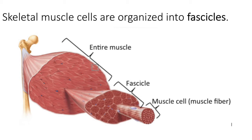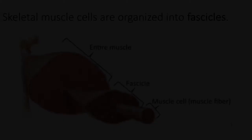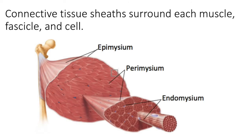Those smaller units are called muscle cells. Remember, when we described skeletal muscle tissue we said the cells are long, cylindrical, and multi-nucleated — that is exactly what we're talking about here. Many muscle cells are bound together into a unit called a fascicle, and then many fascicles are bound together to create the entire muscle.